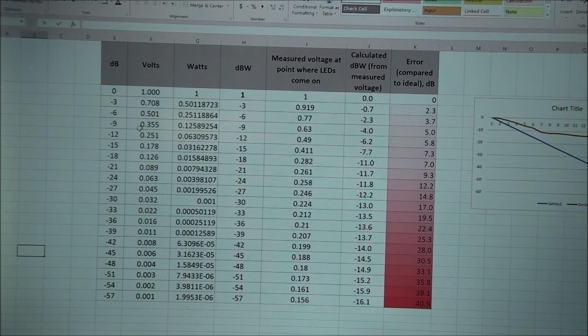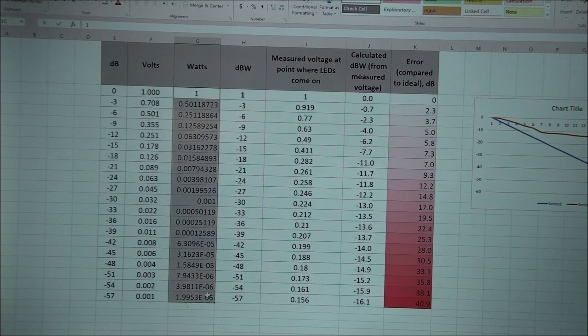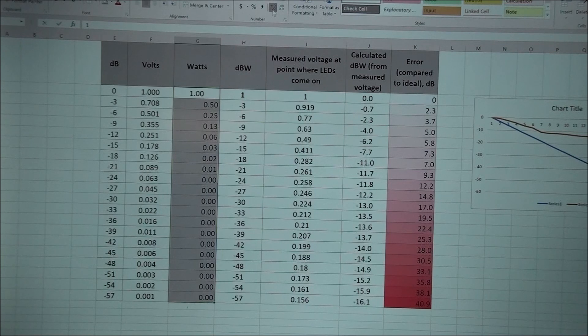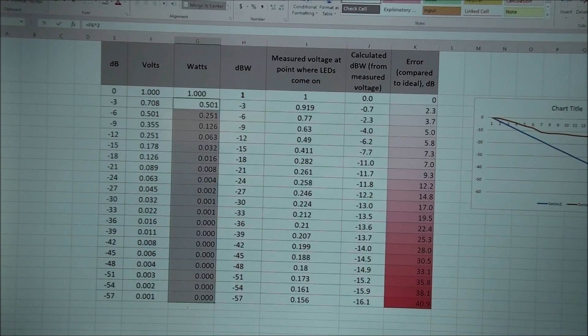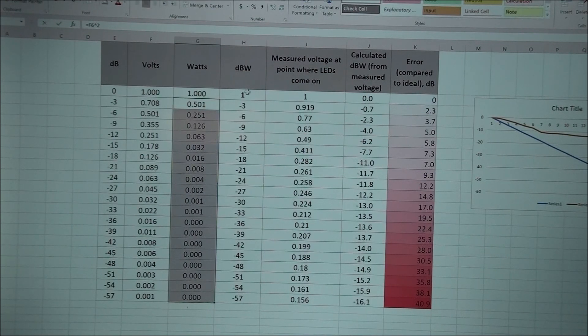This is how many volts would equate to minus three dB and minus nine, etc. Then in watts, this is how many watts it would be for that amount of power, and here is dB relative to one watt which of course is going to match over here.